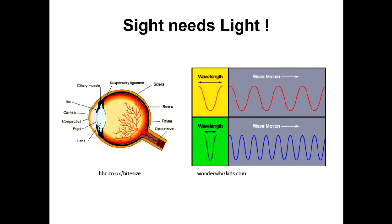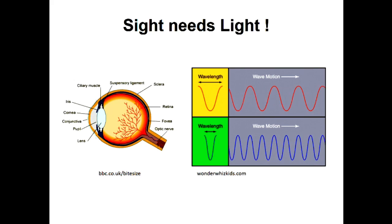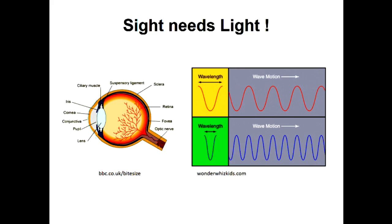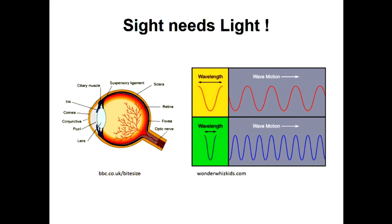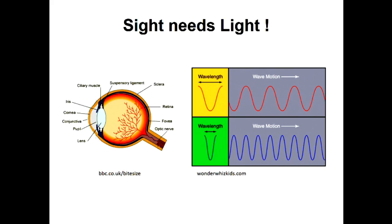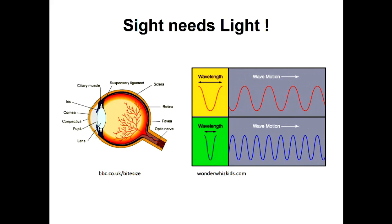Sight needs light. If you go into a darkened room or cave and switch all the lights off, you literally can't see your hand in front of your face. At the back of your eye there are rods and cones: rods detect black and white, and cones detect colour. Cones need a higher level of light to function, which is why at low light levels — like at night — you don't see colours very well and tend to see more in black and white.